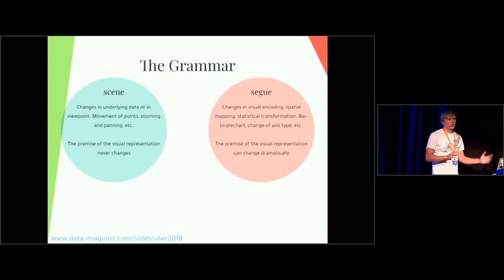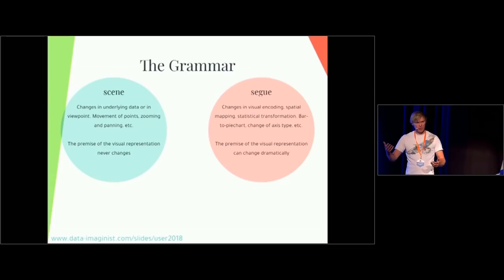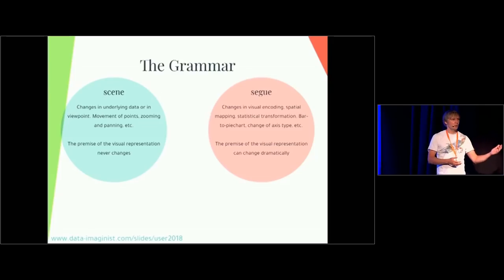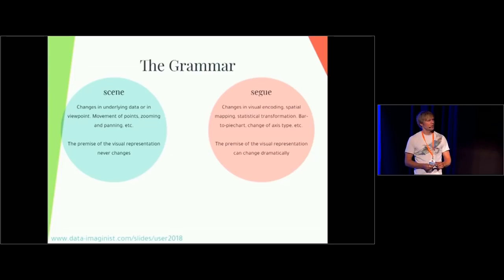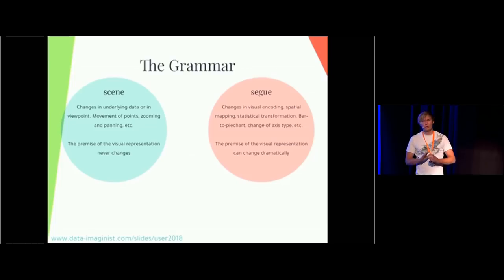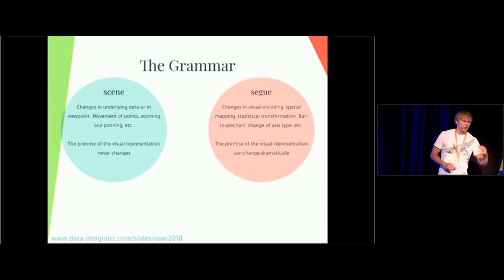A scene really comprises changes in what is shown — changes in the underlying data, changes in the viewpoint. The whole overarching idea of a scene is that the premise of the visual representation never changes. You don't have to readjust yourself; you just accept that data is changing along the animation. This is in contrast to a segue, which is changes in the visual encoding — changing the spatial mapping and so on. For instance, a change from a pie chart to a bar graph. The premise of this type of change is that the universe defining your visualization changes completely and has absolutely new rules.